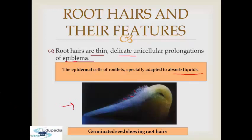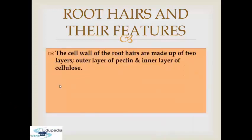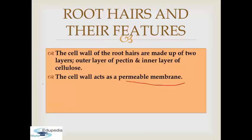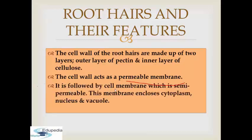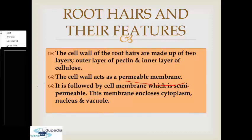Root hairs are very, very thin. The cell wall of the root hairs is made up of two layers: the outer layer of pectin and the inner layer of cellulose. The cell wall of the root hair acts as a permeable membrane. It is followed by the cell membrane which is semi-permeable. This membrane encloses cytoplasm, nucleus, and vacuole. This was the root hair structure.